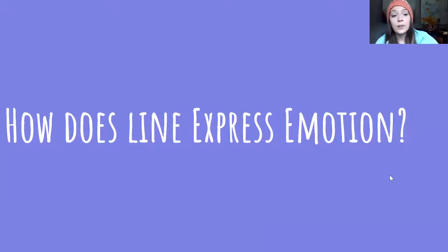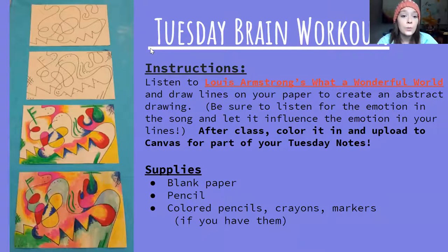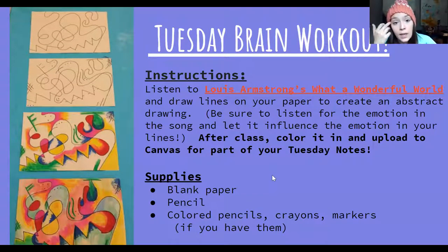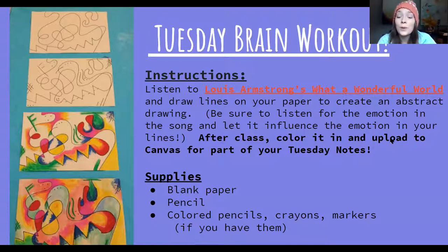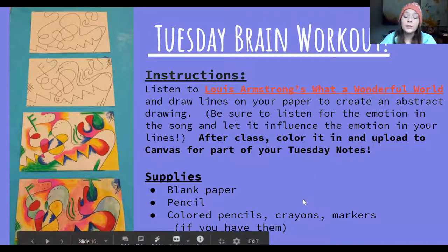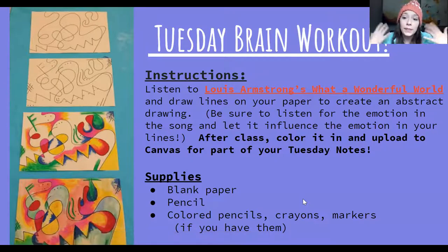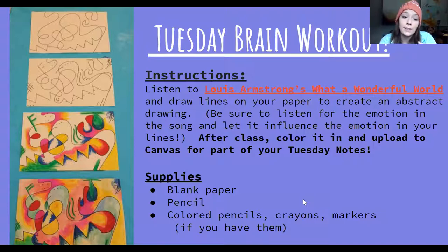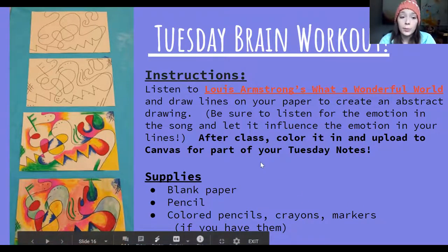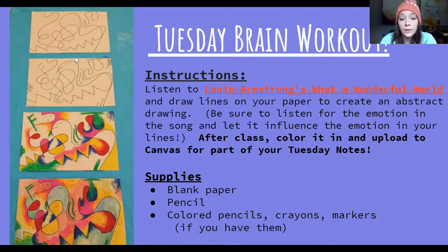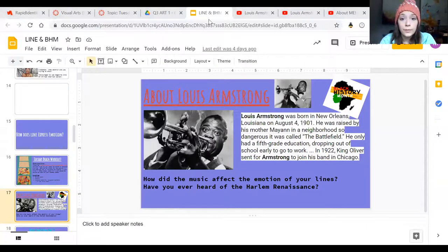Today we're going to look further into how lines express emotion. With your paper and your pencil or pen, we're going to do our Tuesday brain workout. We're going to listen to Louis Armstrong's song 'What a Wonderful World,' and as we listen, just like yesterday, use your pen or pencil to start drawing lines across your paper. Make sure you're trying to listen to what kind of emotion he's trying to portray in his song. Just complete the first two steps — you don't have to add color yet, just have some good strong lines drawn across your paper.